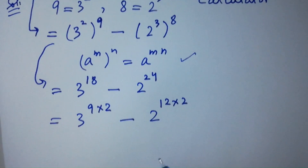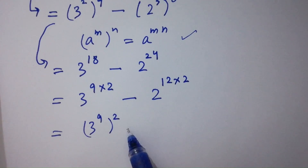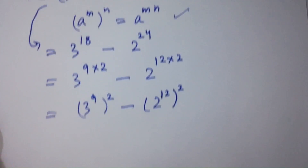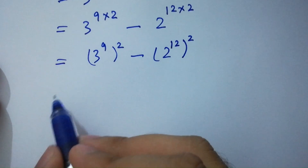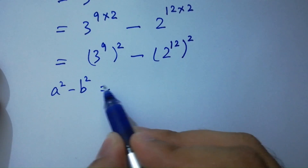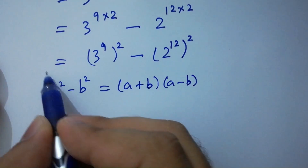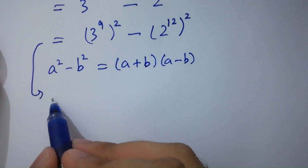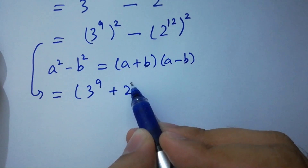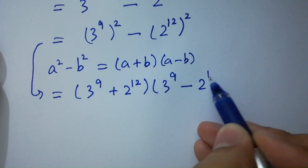Likewise, we can rewrite this as 3 to the power 9, to the whole power 2, minus 2 to the power 12, to the whole power 2. So we can use the difference of squares formula: a squared minus b squared equals (a plus b)(a minus b). We get (3 to the power 9 plus 2 to the power 12)(3 to the power 9 minus 2 to the power 12).